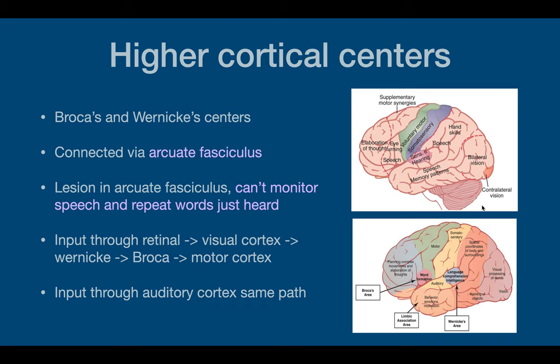Broca's and Wernicke's centers are connected by the arcuate fasciculus. If there's a lesion in the arcuate fasciculus, you can't monitor speech or repeat words just heard — because of a problem in either language comprehension, meaning you don't understand what you heard, or you can't speak the words correctly, thanks to Broca's area.